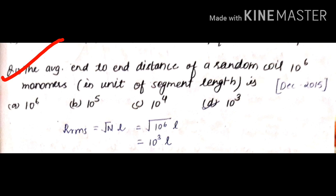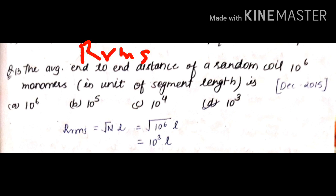Next question asked in December 2015: what is the average end-to-end distance of a random coil with 10⁶ monomers, in units of segment length? The root mean square formula is r = √(N) × l. Here N = 10⁶, and since the answer is requested in units of segment length l, we don't need a specific value for l. Taking the root of 10⁶ gives 10³, so the answer is d: 10³.